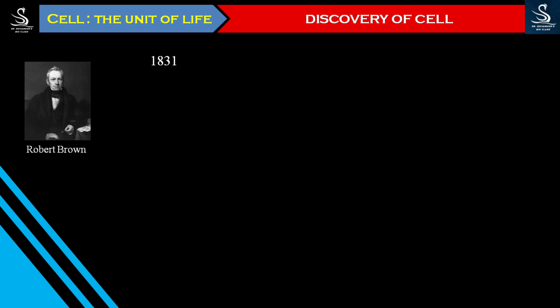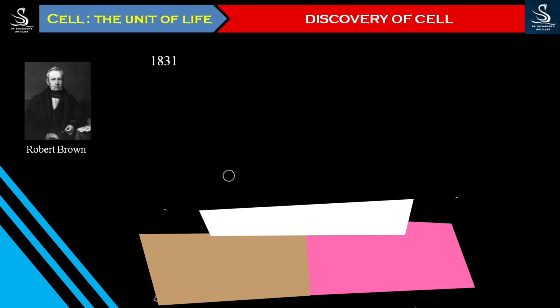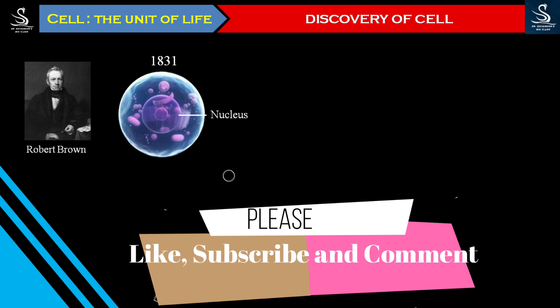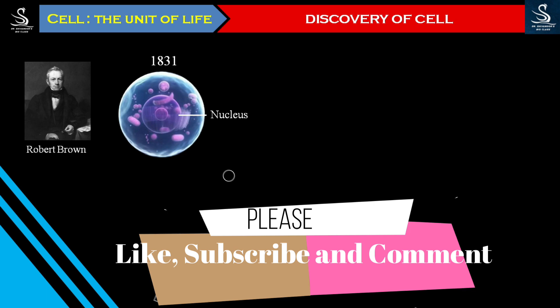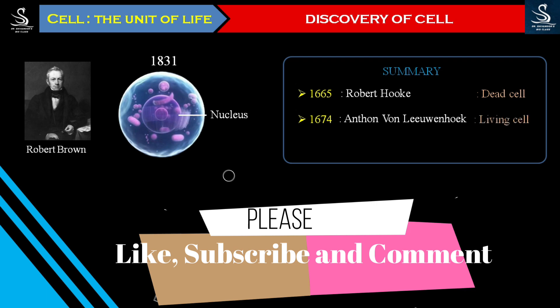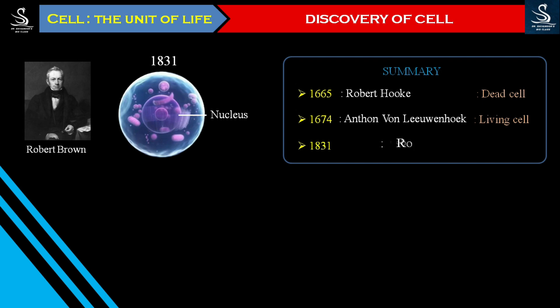Microscopes were not good enough for higher magnifications for several years, so scientists were unable to observe more. Then, in the year 1831 — a huge gap later — scientist Robert Brown discovered the nucleus for the first time. To summarize: in 1665, Robert Hooke discovered the dead cell; in 1674, Antony van Leeuwenhoek observed the living cell; and in 1831, Robert Brown discovered the nucleus.